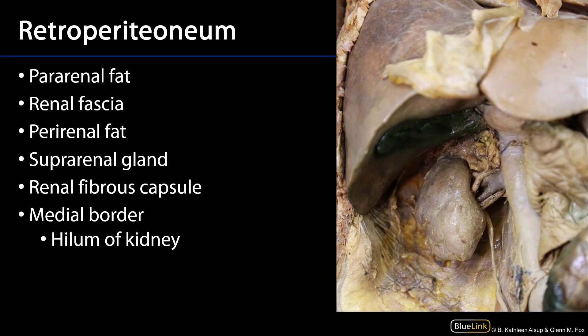Let's take a look at that now. Here is the renal fascia, which has been incised, and we can see within it some perirenal fat. Anything outside of this space would be pararenal fat. I always recall that 'I' in perirenal means inside the renal fascia.